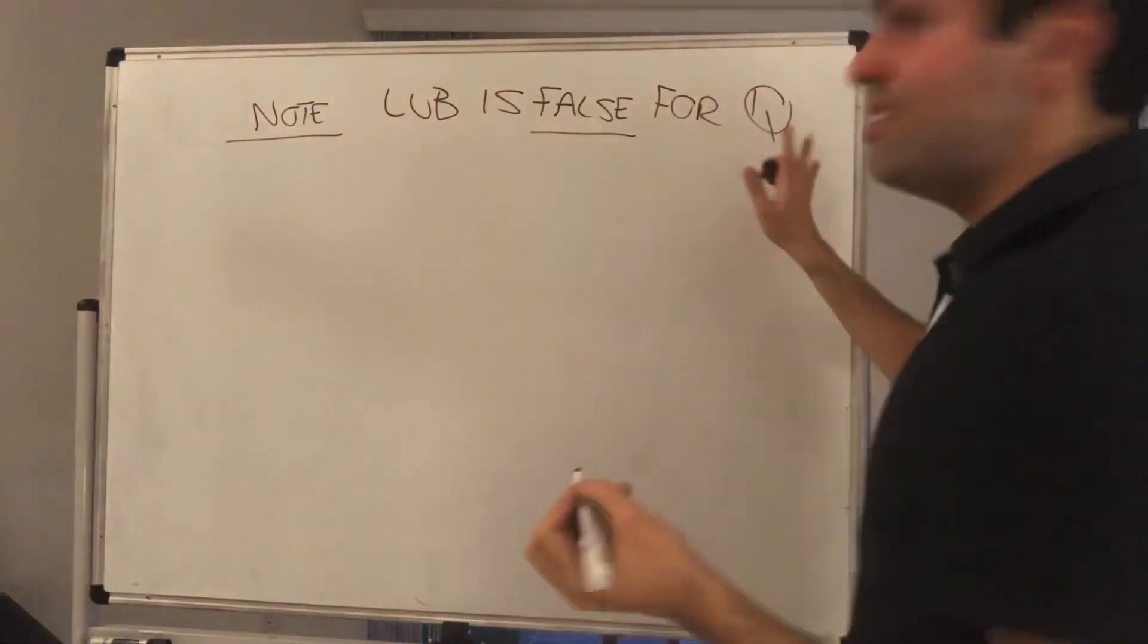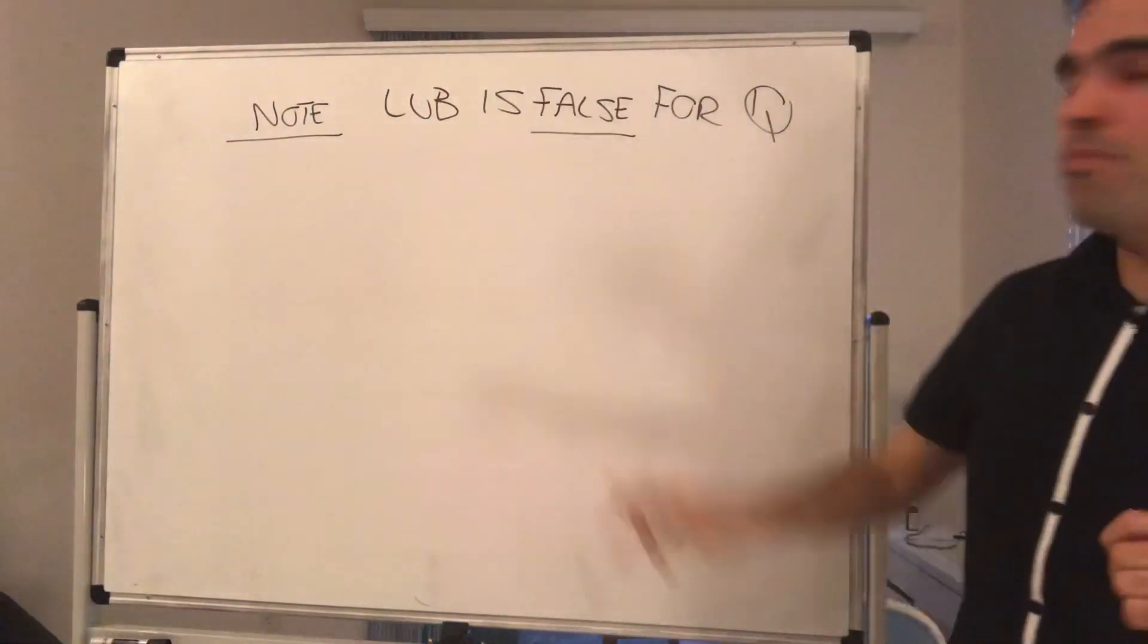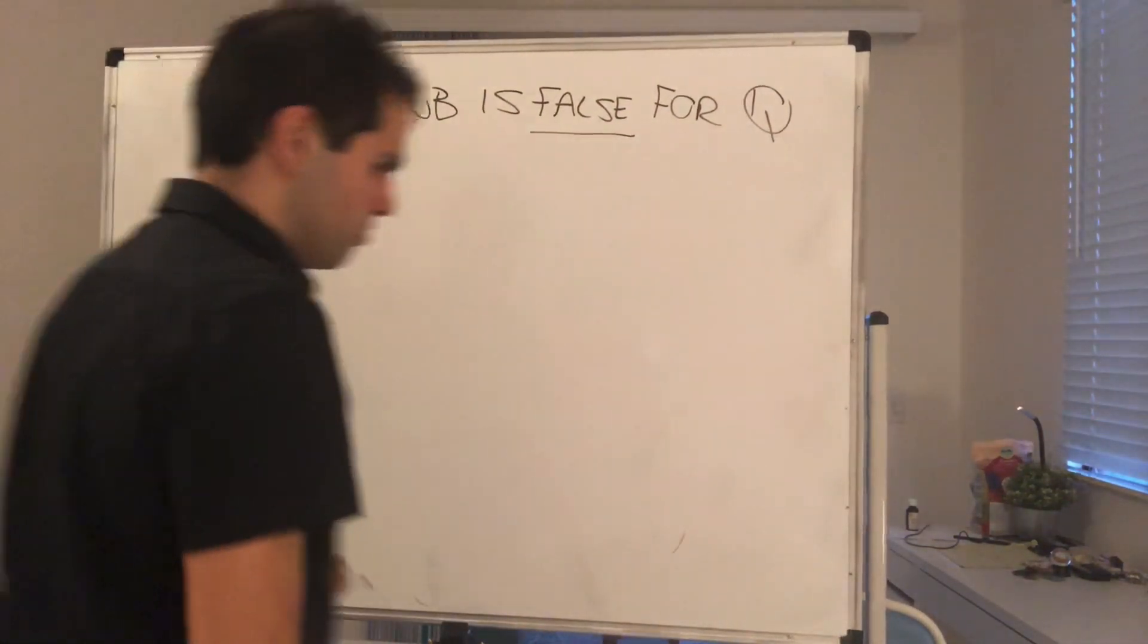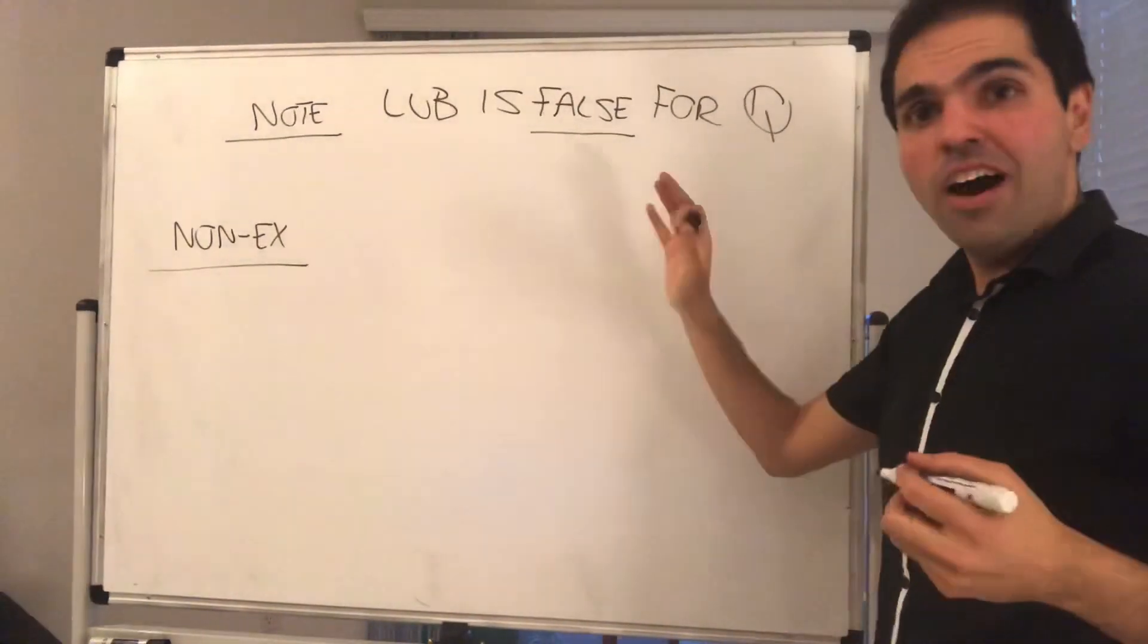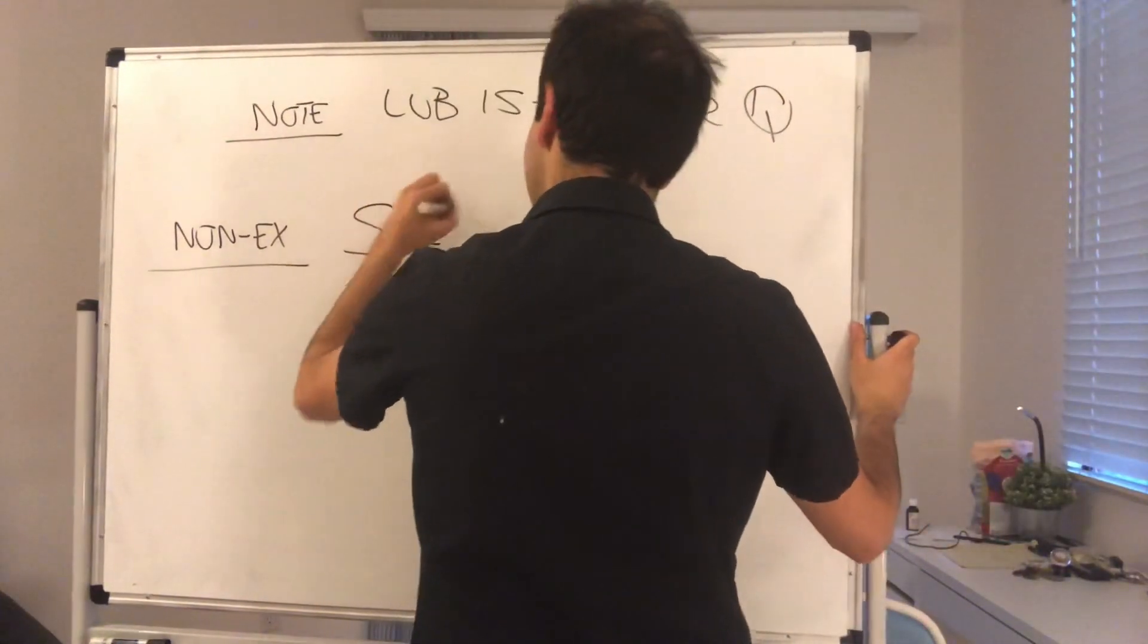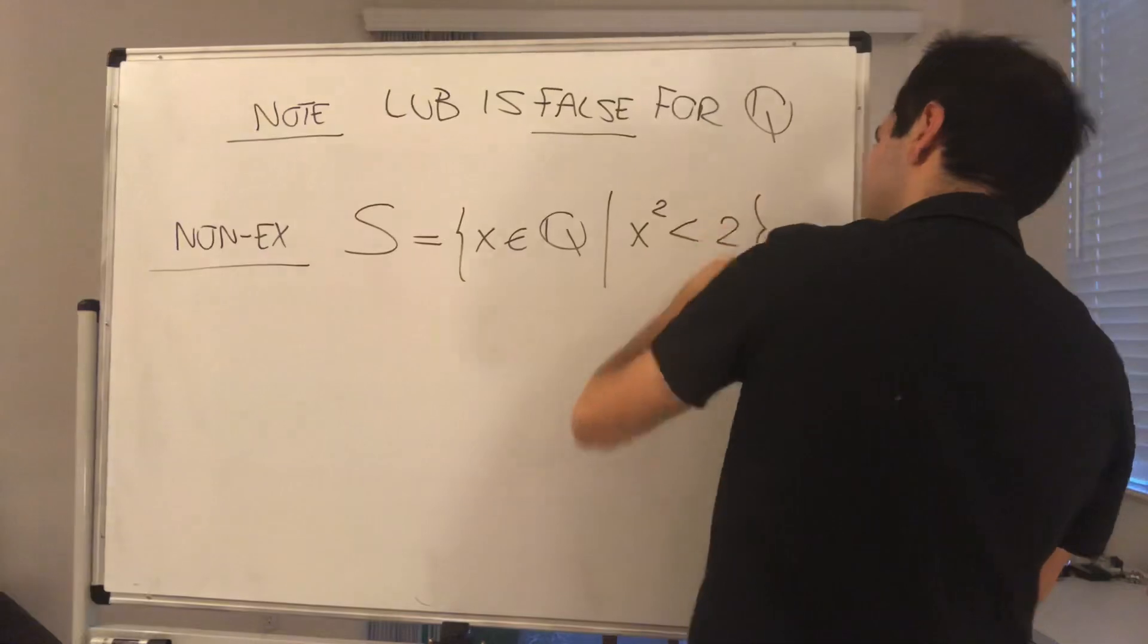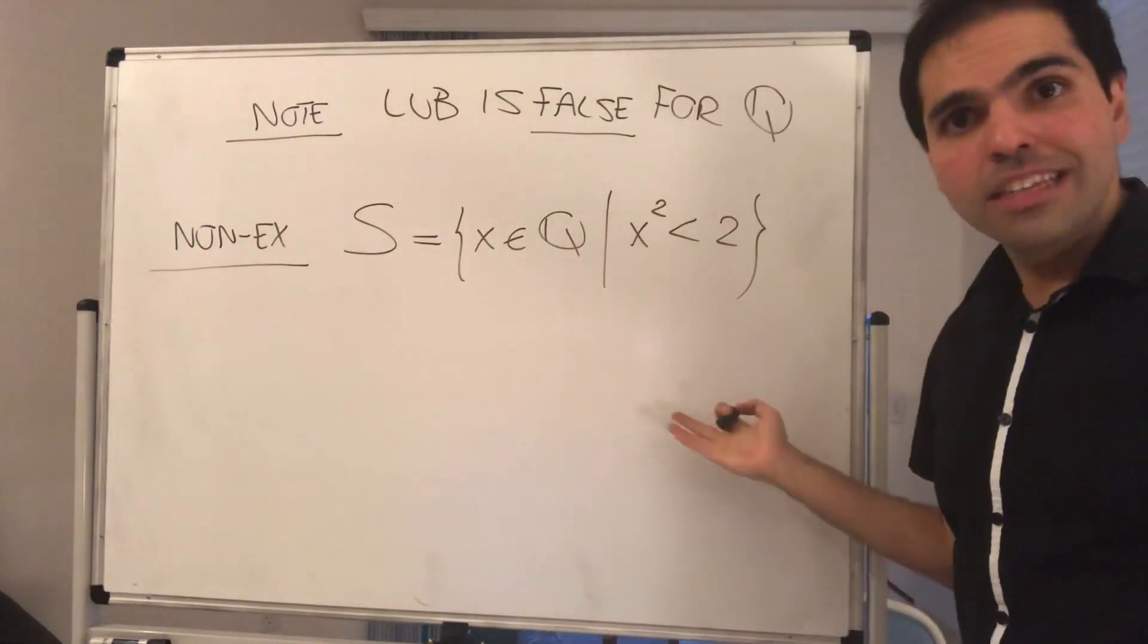And by the way, this is what makes R so special. R does have the least upper bound property, but Q does not have the least upper bound property. And let me give you a non-example. So let S be the set of all rational numbers whose square is less than 2.